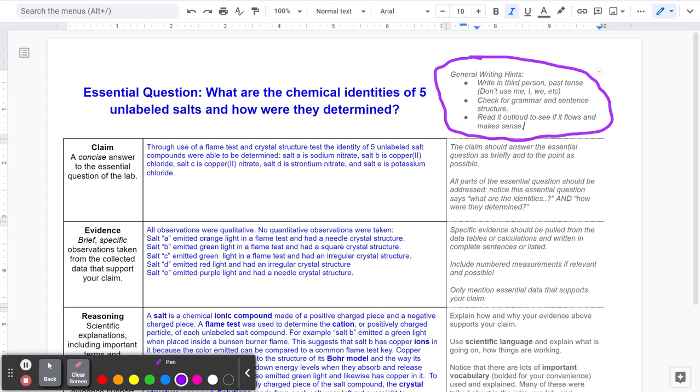Some things to consider when writing your conclusion statements is to write in third person and in past tense. Try not to use words like me, I, or we when describing what was happening, and just describe what was going on and what happened before. It's always a good idea to check for grammar and sentence structure. I know as a teacher, when I'm reading some of these, sometimes it's very hard to follow what a student is trying to say just based on their grammar and their sentence structure.